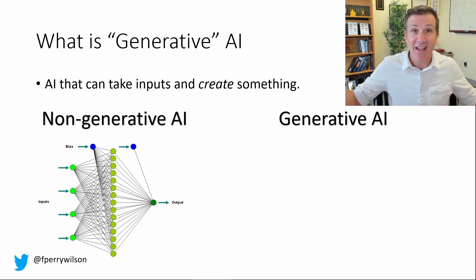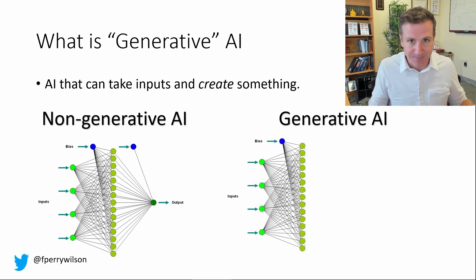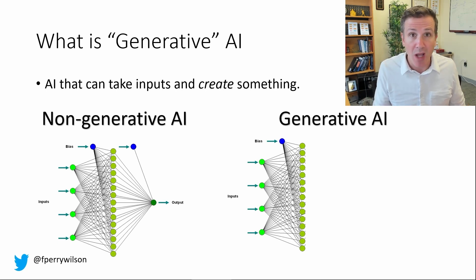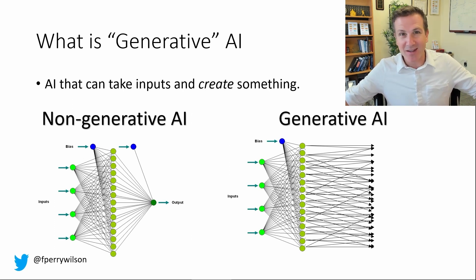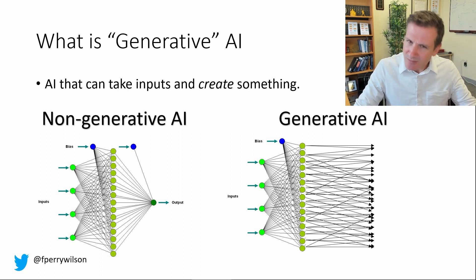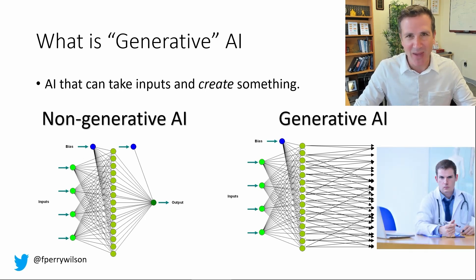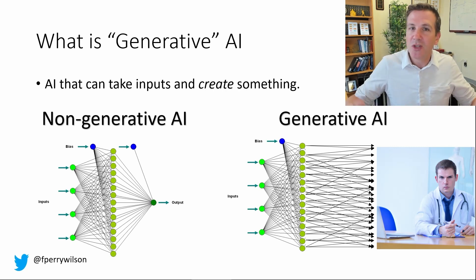You take an x-ray, which is a ton of data, and you compress it into yes-no pneumonia — a binary type of assessment. Generative AI is fundamentally different, although the architecture is somewhat the same. You're taking inputs, and instead of compressing those inputs down to a single output like yes-no diabetes, you're creating multiple outputs. You're actually creating more as an output than is put in to begin with. Which is how you can take a prompt — like I put in a prompt to a generative AI that said 'serious doctor discussing artificial intelligence' — and I got this, which is not bad. He looks somewhat concerned.